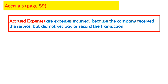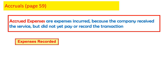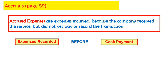Accrued expenses are expenses incurred because the company received the service but did not yet pay or record the transaction. So effectively, we incurred an expense but did not pay for it yet. The expenses are recorded before the payment is done — expenses recorded before cash payment.